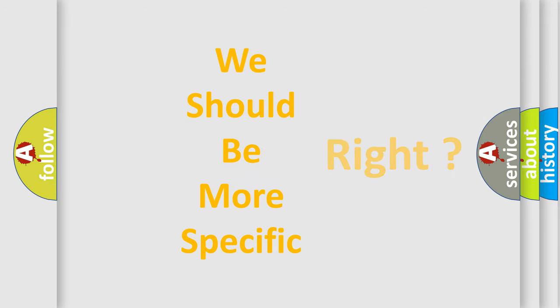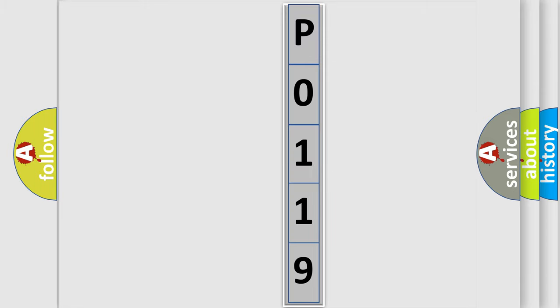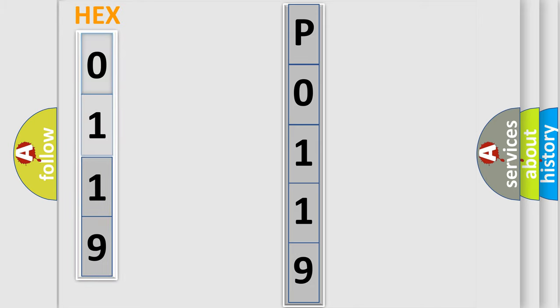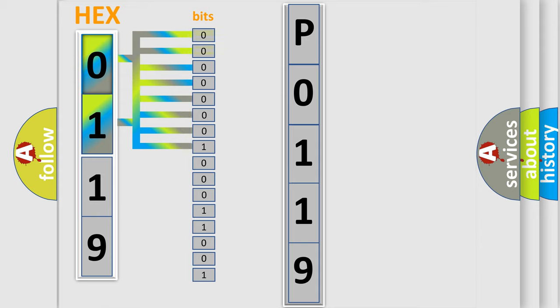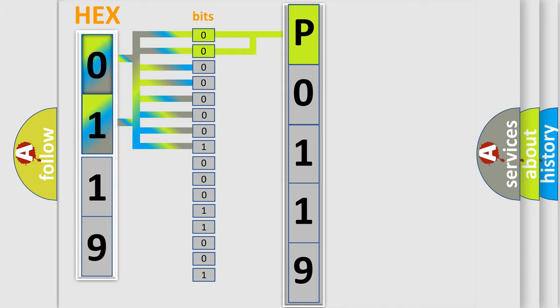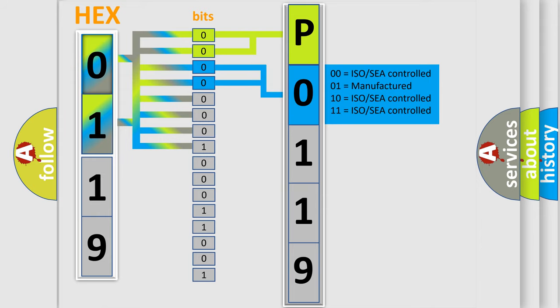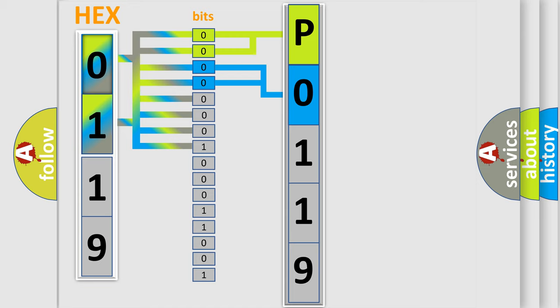The following demonstration will help you look into the world of software for car control units. The error code is split into two bytes consisting of 16 bits. One bit is the basic unit that each computer works with, and the bit has two logical states: zero for low level and one for high level. By combining the first two bits, the basic character of the error code is expressed. The next two bits determine the second character, and the last bits of the first byte define the third character of the code.